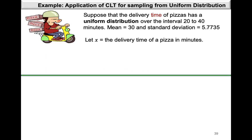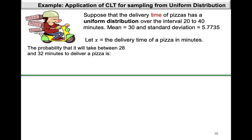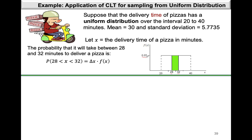Now the probability that it will take between 28 and 32 minutes to deliver a pizza is represented on the graph as the shaded area where the x values are from 28 to 32, and the height remains the same at 0.05. This probability is calculated as the change in x multiplied by the probability density function: (32 - 28) × 0.05, which gives us a final answer of 0.2.